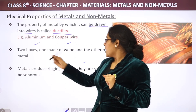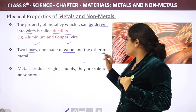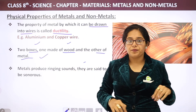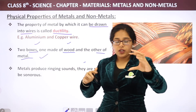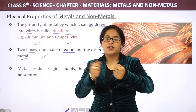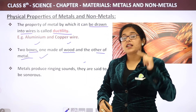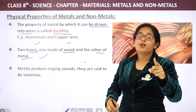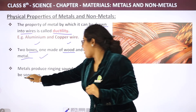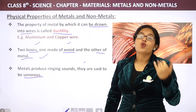Now, take two boxes — one made of wood and the other made of metal — and do this activity at home. Strike the wood box and the metal box against each other. You will know that the metal box will produce sound. This is because metals are generally sonorous.